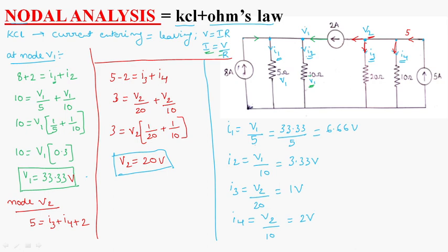So, this is about the currents. If you want to find whether the currents are true or not, let us consider this equation. 8 plus 2, 10 is equal to I1 plus I2. 10 is equal to I1 plus I2, which is, what is I1? I1 is equal to 6.66 plus 3.33, which is 9.999, which is approximately equal to 10 ampere. So, our solution is exactly correct. This is about nodal analysis. Thank you.